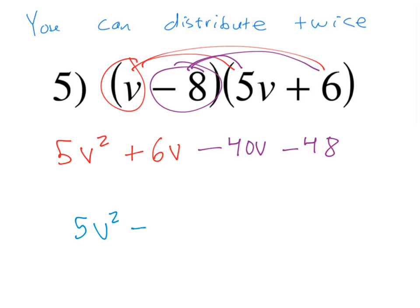6 minus 40 is going to give you negative 34. And make sure you tack on the v there, and there's that v factor in both. And then the subtract 48 at the end doesn't have another term to combine with, so it just comes down. And voila, we have simplified after we distributed twice.